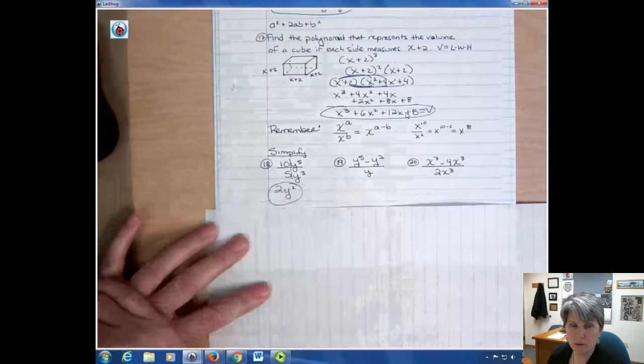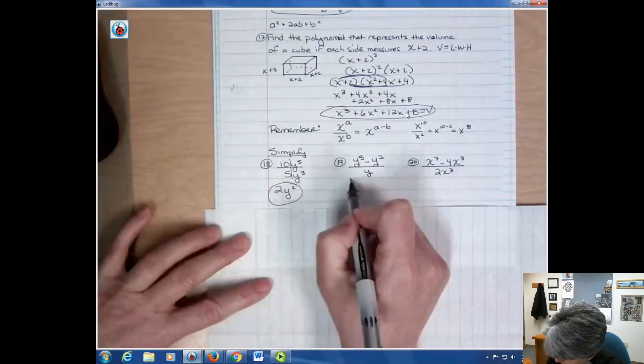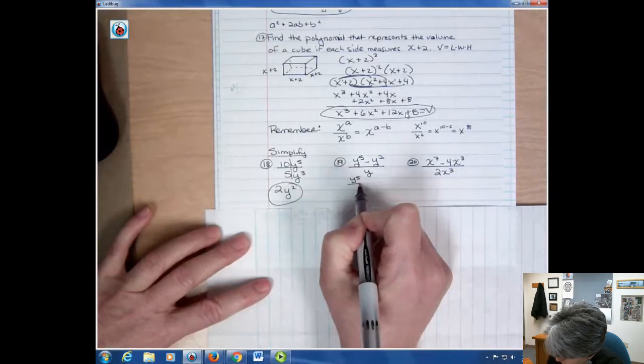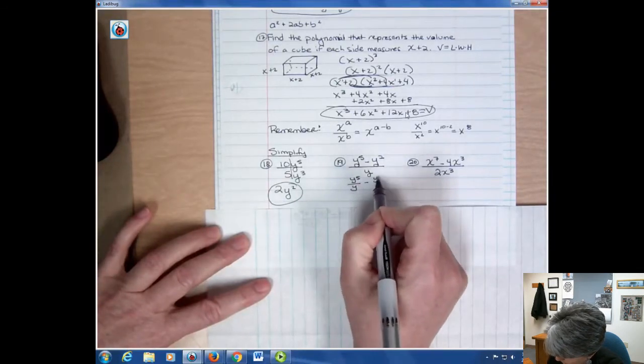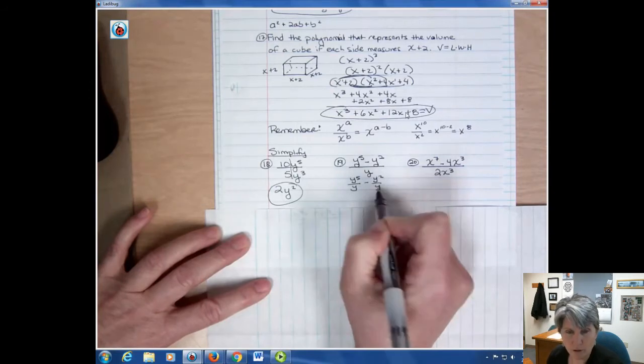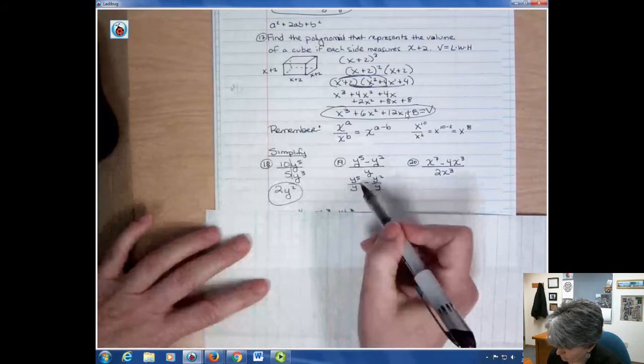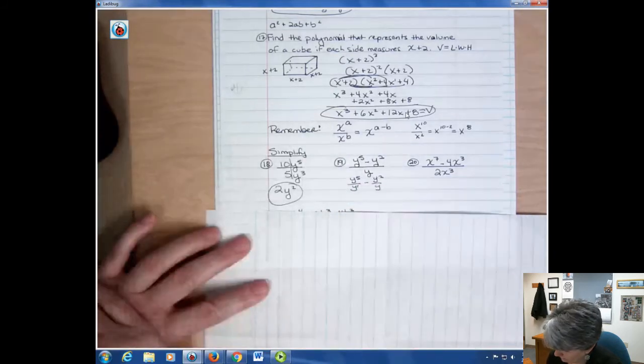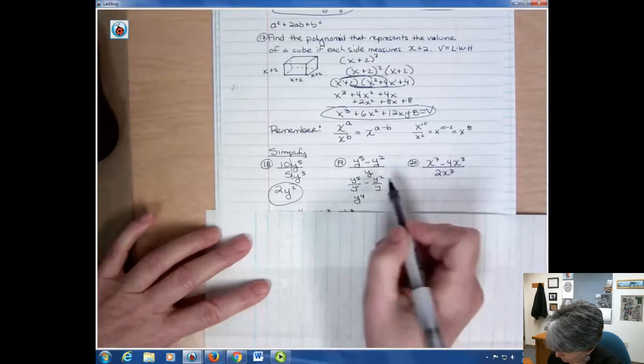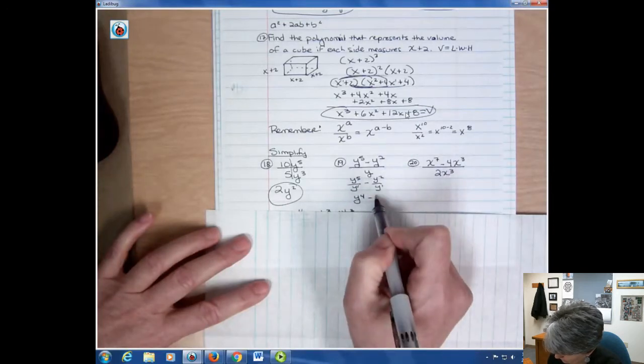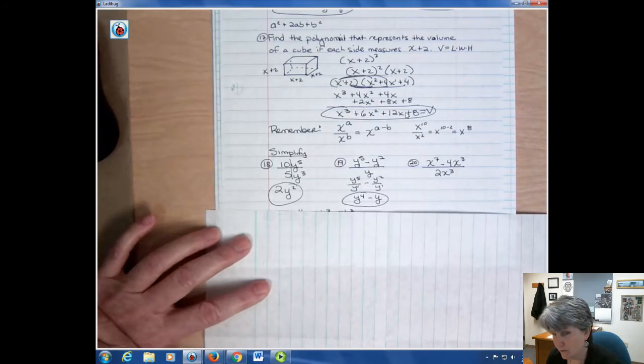If you have something like number 19, where you have two terms up there, you have to think of it as two separate problems. You have y to the fifth over y, and then y to the second over y. It goes under both of those terms. So then you say, if I have 5 and I subtract 1, that leaves y to the fourth. And if I have 2 and I subtract 1, that leaves just y. And there's my answer. I can't combine those any further because they have different degrees.